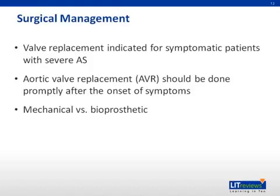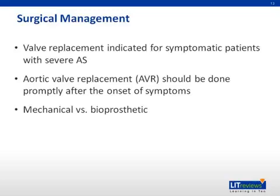Surgical replacement of the aortic valve is indicated when symptoms develop and is the only effective therapy for severe AS. It should be done soon after the onset of symptoms due to the high risk of sudden death and 50% mortality at 2-3 years after symptom onset. It is important to consider whether the patient would benefit more from a mechanical or a prosthetic valve, with the principal consideration being the increased durability of the mechanical valve versus the increased burden of lifelong anticoagulation. Aortic valve replacement should also be performed in asymptomatic patients with severe AS if they are undergoing CABG, an operation on the aorta, or another valve operation.